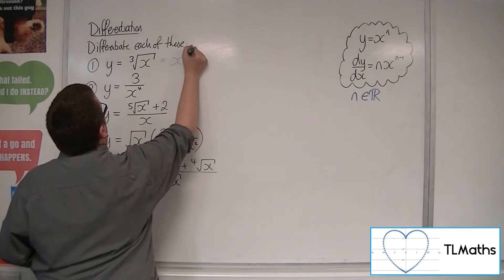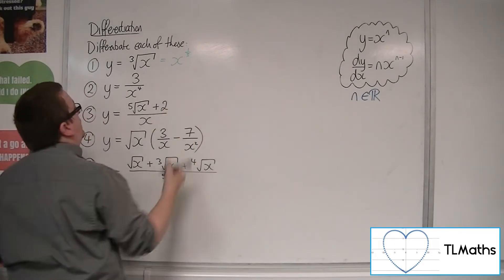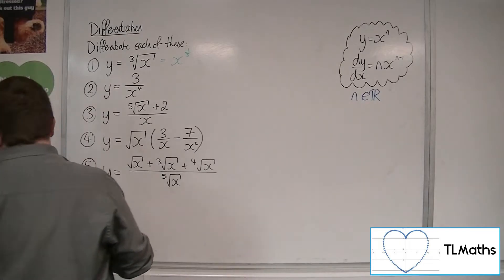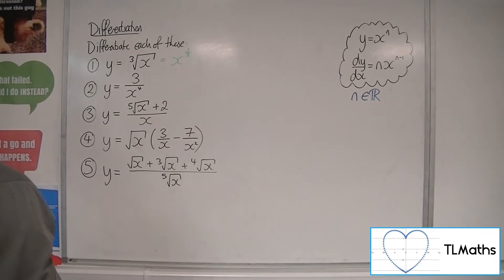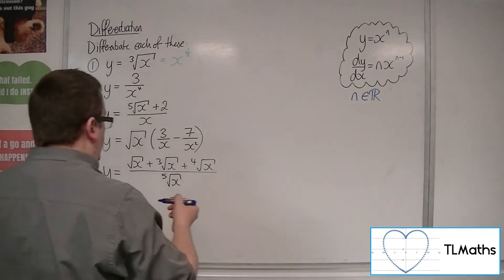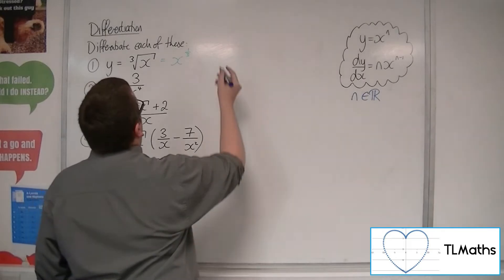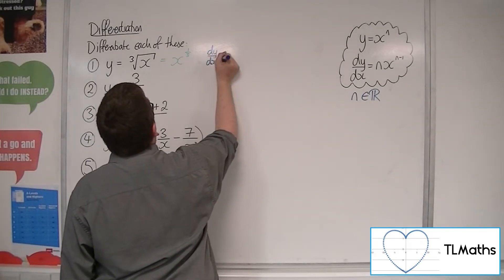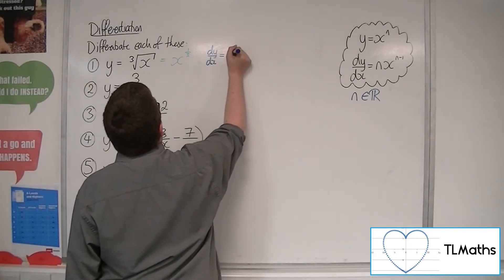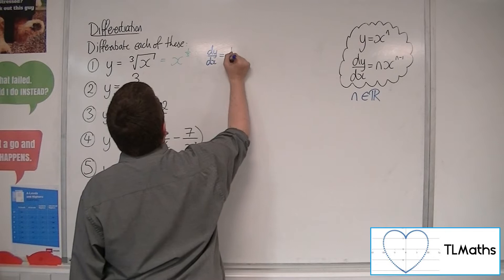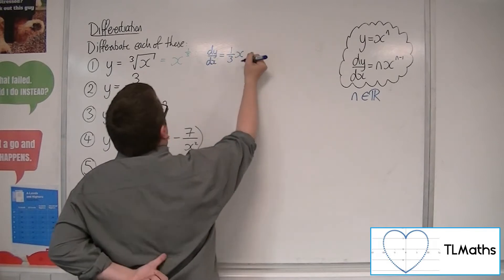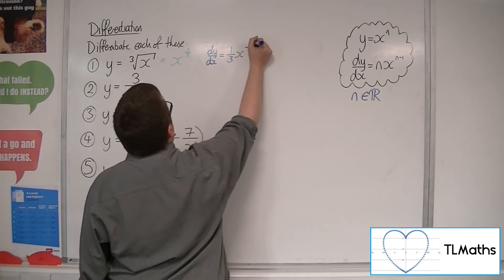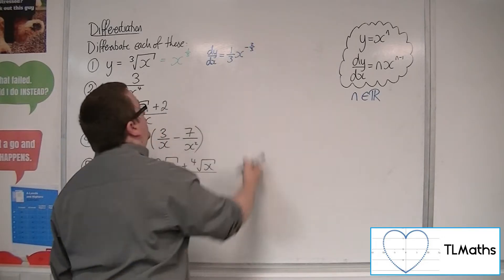The first thing we want to do is write this as x to the something. We know that the cube root of x is equal to x to the one third. So dy/dx — the one third will come down to the front, and then we take one from the power, giving us x to the minus two thirds.